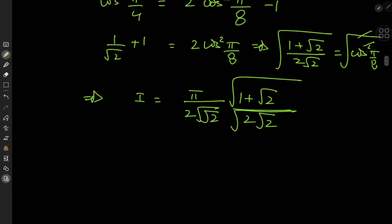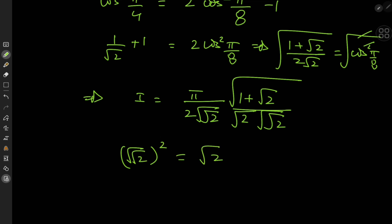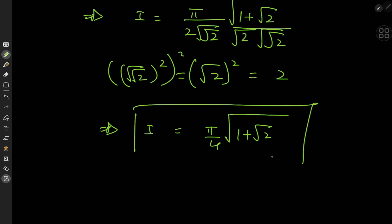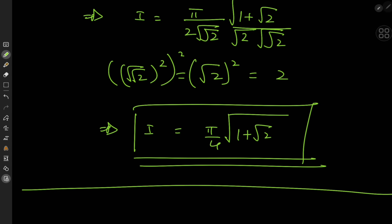Now to make some of these square roots disappear: in the denominator we have √2 times ⁴√2. Since (⁴√2)² equals √2, and we already have another √2, squaring again gives 2. Multiplying that by the factor of 2 in the denominator gives a total denominator factor of 4, or equivalently π/4. So the final answer is I equals π/4 times the square root of 1 plus √2, which is a pretty cool closed form. I hope you enjoyed the video — be sure to like and subscribe.